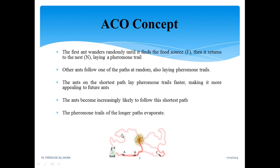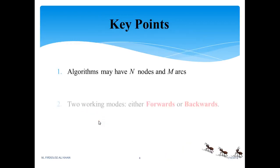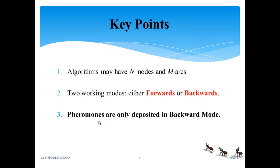The pheromone trails of the longer path evaporate. As you can see here, the longer path is this one between food and the nest, and this is the shortest path which got more pheromone trails. The longest path pheromone trails evaporate with respect to time. The shortest path is discovered via pheromone trails.